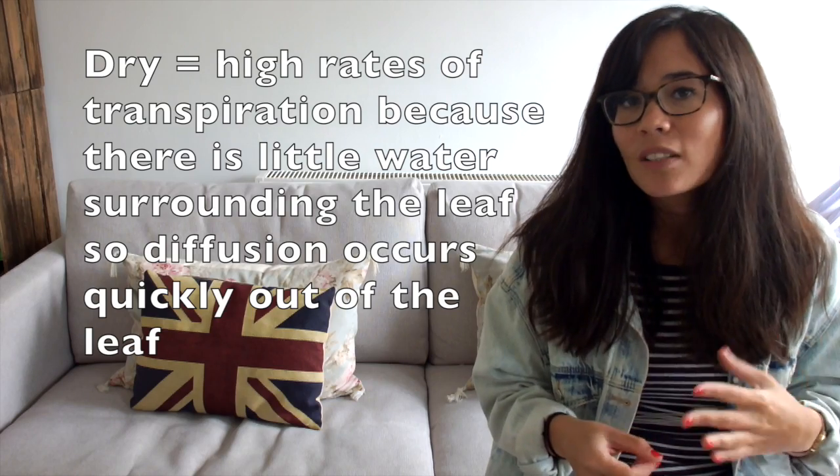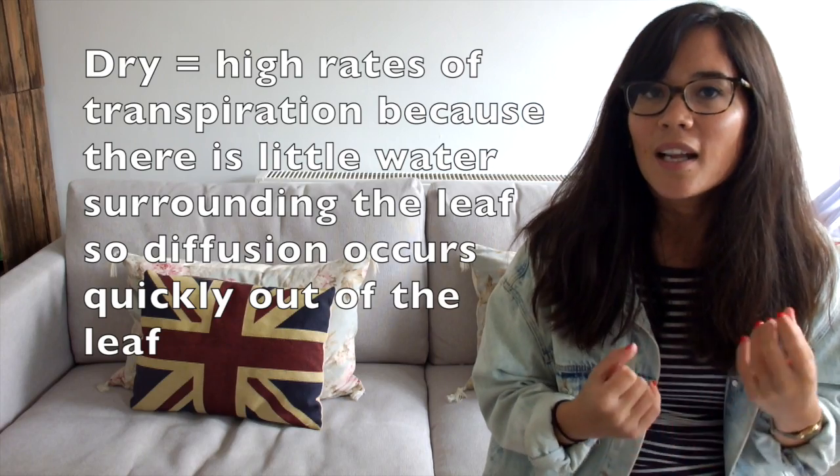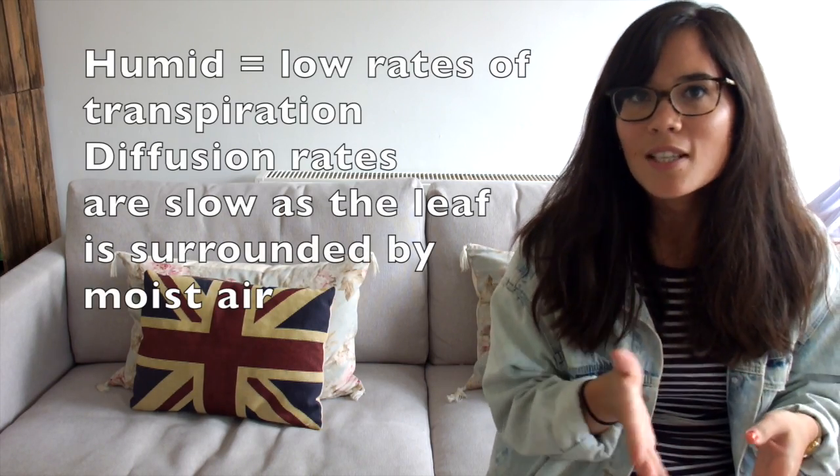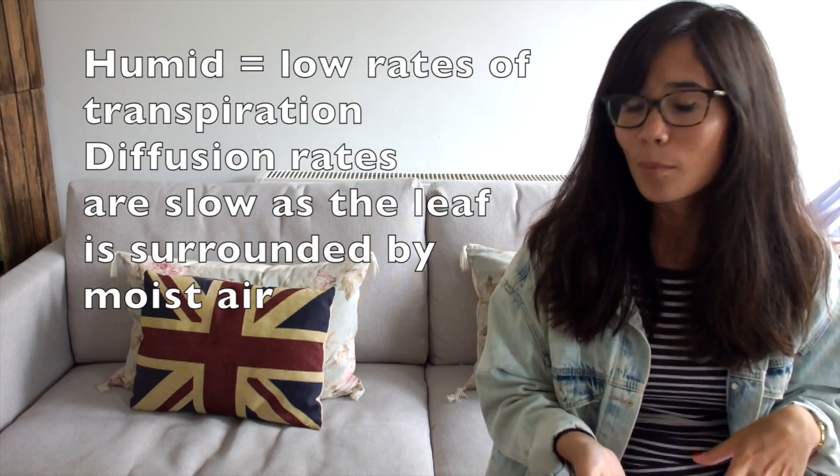Diffusion occurs from inside the leaf through the stoma to the outside. If it's dry, there are very few water molecules outside the leaf because the air is dry, which means there's lots more water inside the plant. Based on diffusion, the water will leave the stoma very quickly, giving you high transpiration rates. Equally, if it's humid, there's a lot of moisture and water molecules in the air, so the difference between the amount of water inside and outside the leaf will be very small — the gradient will be small — and therefore transpiration won't be happening very much.